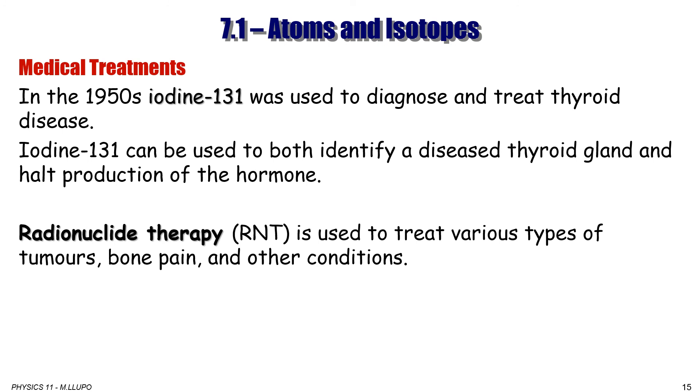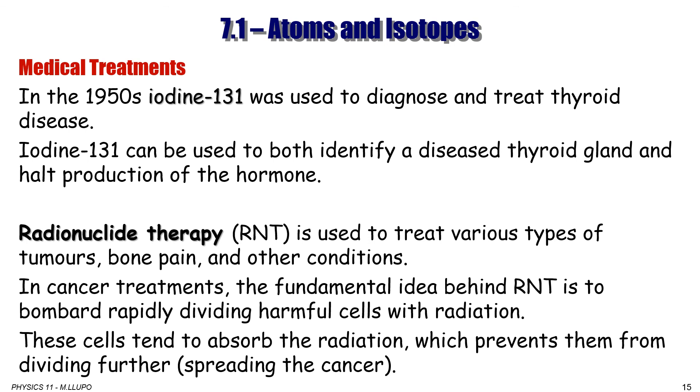Radioisotopes have medical treatment applications. Since 1950s, iodine-131 was used to diagnose and treat thyroid disease. Iodine-131 can be used to both identify a diseased thyroid gland and halt the overproduction of hormones. Radionuclide therapy or RNT is used to treat various types of tumor, bone pain, and other conditions. In cancer treatment, the fundamental idea behind RNT is to bombard rapidly dividing harmful cancer cells with radiation. These cells tend to absorb the radiation more than normal cells, which prevent them from dividing further, so spreading the cancer.